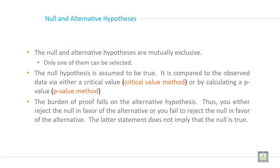The null and alternative hypotheses are mutually exclusive. Only one of them can be selected. The null hypothesis is assumed to be true. It is compared to the observed data via either a critical value—you can say critical value method—or by calculating a p-value, which is the p-value method.